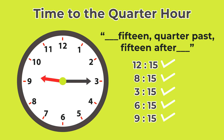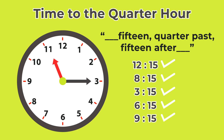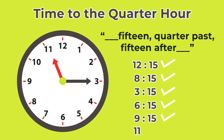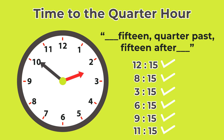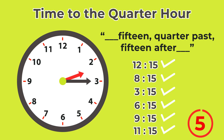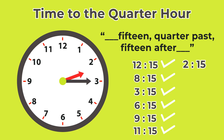Number three: if the hour hand is a bit past the eleven and the minute hand is on the fifteen, this will be quarter past eleven, or eleven fifteen. Number four: if the hour hand is a bit past the two and the minute hand is on the fifteen, this will be quarter past two, or two fifteen.